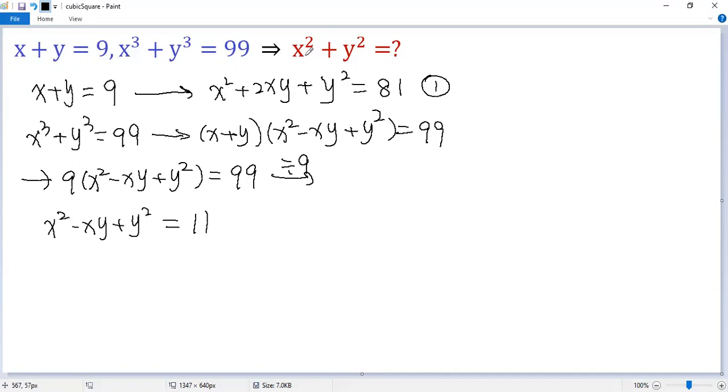Our goal is to find the sum of x squared and y squared, so we want to eliminate x times y. Here we have 2xy and negative xy. So multiply both sides by 2. We get 2x squared minus 2xy plus 2y squared equals 22. Denote it as equation 2.